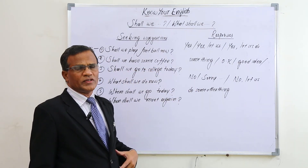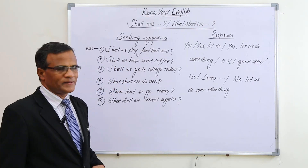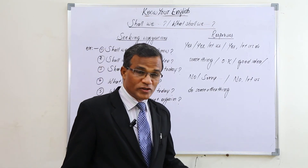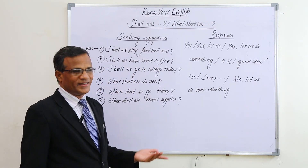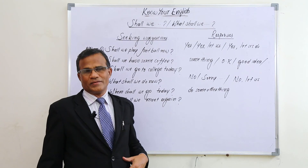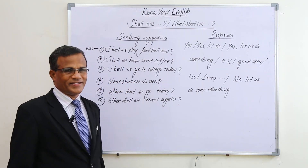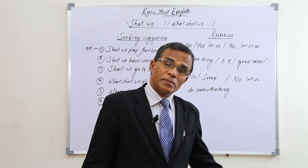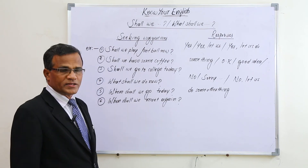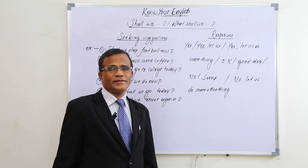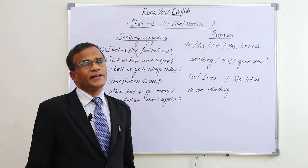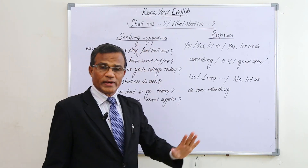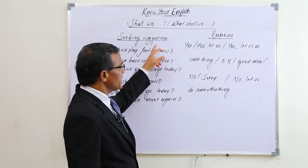More examples: 'Shall we have some coffee?' — response: 'Yes, let us.' 'Shall we go to college today?' — response: 'No, let's go to a movie.' 'What shall we do now?' — response: 'Let's go to a movie.' 'Where shall we go today?' — response: 'Let's go to NTR Park.' 'When shall we meet again?' — response: 'Better next Sunday.' So 'shall we,' 'what shall we,' 'where shall we,' 'when shall we' are all used for seeking suggestions.